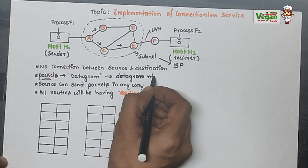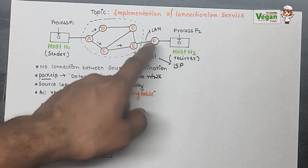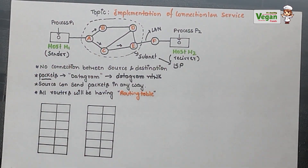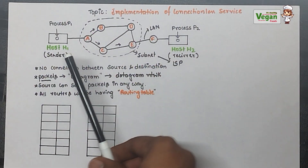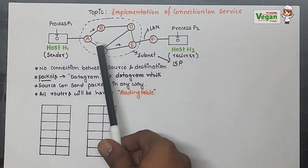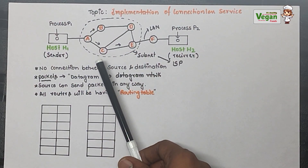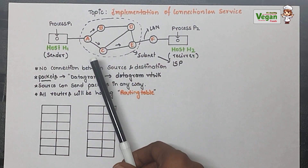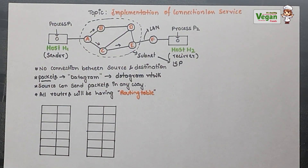In a datagram network, the source can send packets in any way because there is no fixed connection between all the routers. The source sends to the nearest router, and from A it can send through B or through C. After C, it can send through D or E — different paths can be used for the packets to be transferred. All the routers will have a routing table.